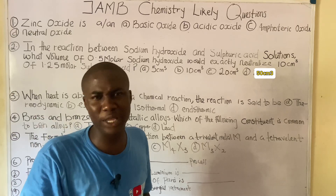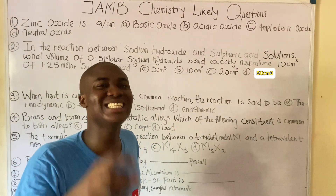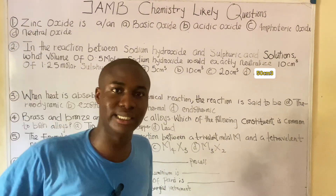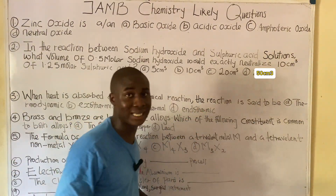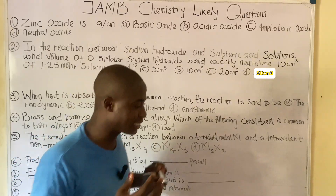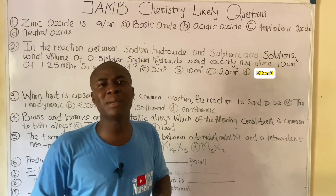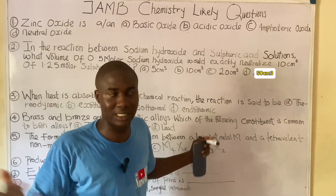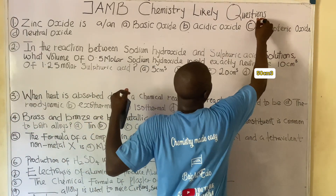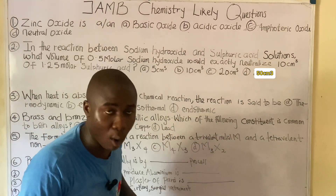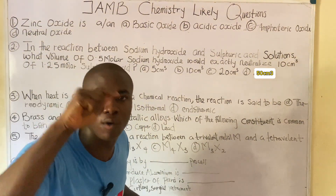It must be noted that zinc oxide has the ability to behave like both an acid and a base. An oxide with these characteristics is called an amphoteric oxide. Amphoteric oxides are oxides that can behave like an acid and also like a base — they have dual properties. So zinc oxide is an amphoteric oxide.